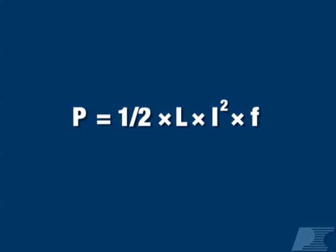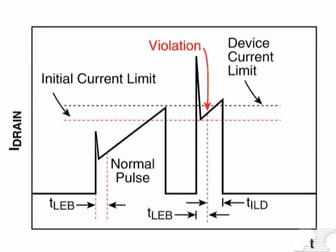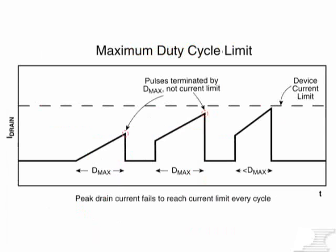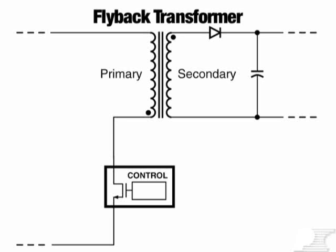If the primary inductance is significantly lower than the minimum value specified, it will limit the power transferred to the output. If it's too high, the transformer may saturate, the turn-on current pedestal might exceed the initial current limit after the leading edge blanking time, or — depending on the device family you're using — the maximum duty cycle may terminate the cycle before the primary current reaches the required level. In all cases, this prevents full power transfer, causing the Power Integrations device to enter auto-restart. Also check the polarity of your transformer windings. If one has been reversed, it will appear as a forward winding, preventing the supply from operating as a flyback converter and limiting power transfer to the output.